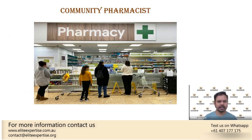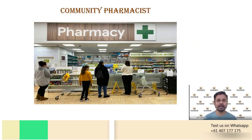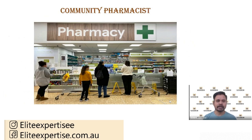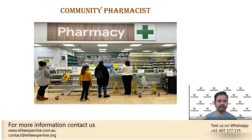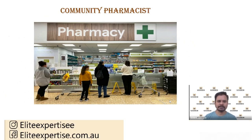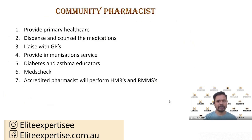What happens in community pharmacy is that whenever patients have any issues — especially primary healthcare problems — they first approach the community pharmacist rather than going to a GP, because getting an appointment with a GP or doctor is a bit challenging here in Australia. So all patients with primary health issues first approach the community pharmacist.